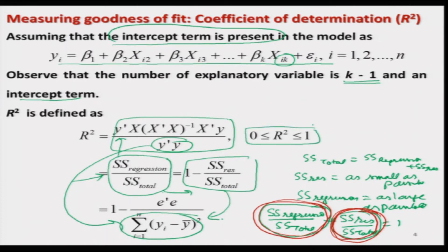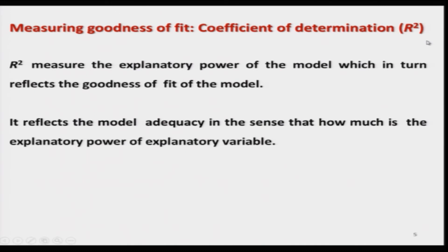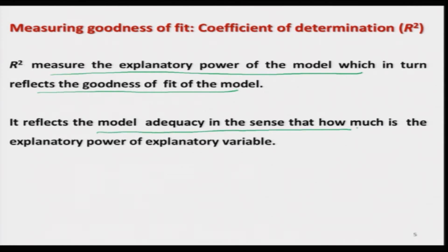R² will always lie between 0 and 1 because R is a multiple correlation coefficient: since r lies between −1 and 1, r² lies between 0 and 1. R² actually measures the explanatory power of the model, which in turn reflects the goodness of fit. It reflects how capable our explanatory variables are of explaining the variation in the fitted model. Ideally, whatever independent variables you have chosen should explain the variation in the outcome.